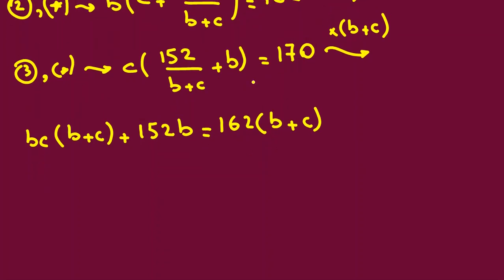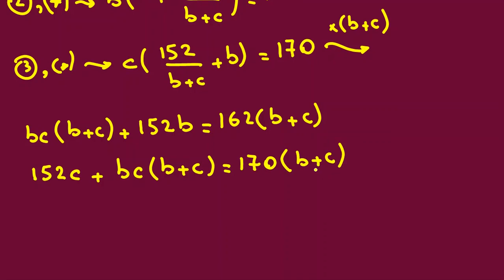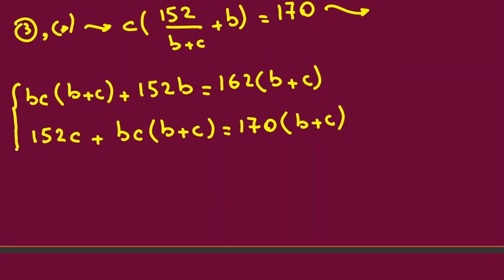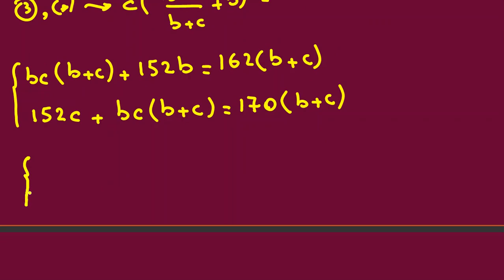Let's work on this one. Now we can say c times this b+c, if we multiply by this, the denominator will be cancelled, 152c plus here. We have cb, I write it bc times b+c, because here we don't have c and b any denominator, we multiply by this. And the last one will be 170b+c. So we have these two equations.